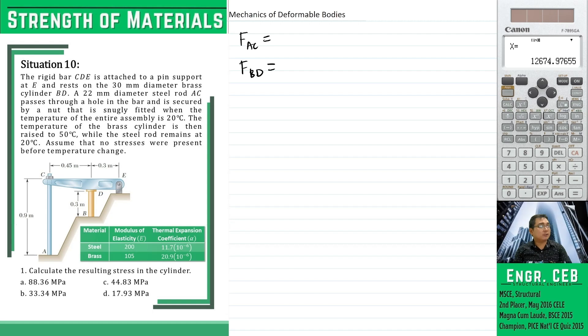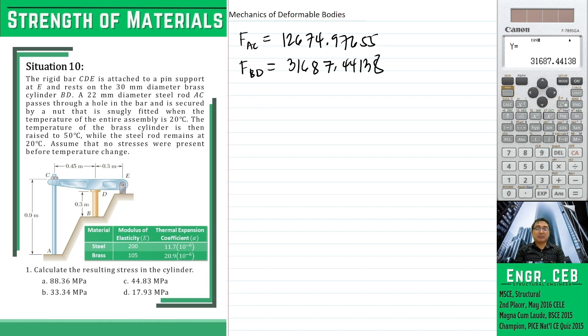Okay, so the force in f sub ec is 12,674.97655. And then the force in bd is 31,687.44138. So we can now solve for the stress in the cylinder bd.